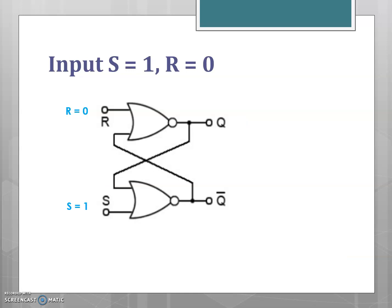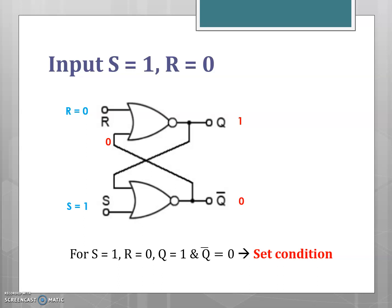For the next case, S equal to 1 and R equal to 0: for the NOR gate with one input equal to 1, the output is equal to 0. This 0 is fed back to the top NOR gate. With 00 as the input, the output equals 1. So for S=1 and R=0, the output Q is equal to 1 and Q-bar equals 0. Since Q is equal to 1, it represents the set condition.